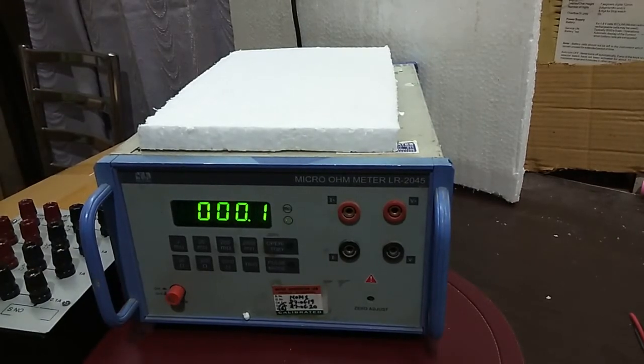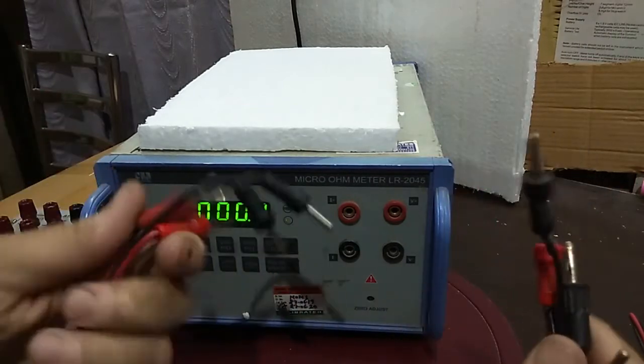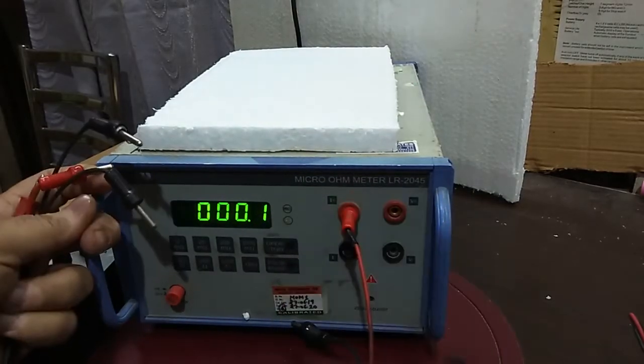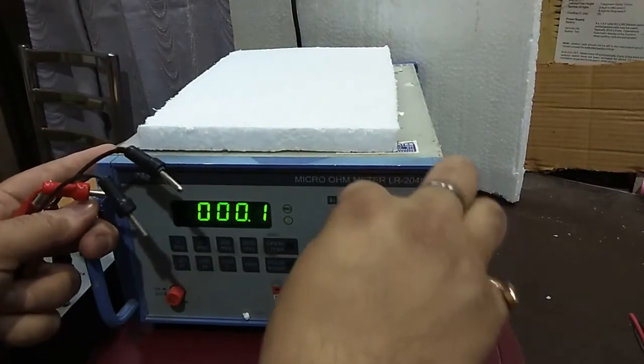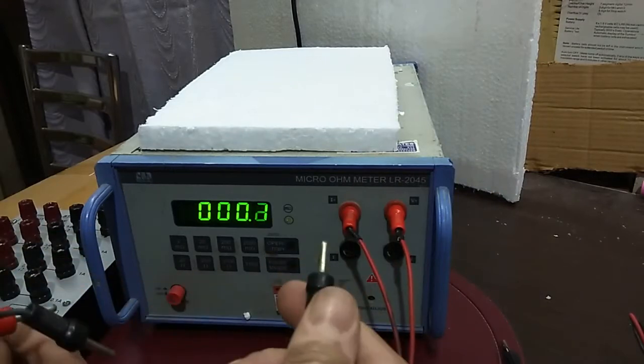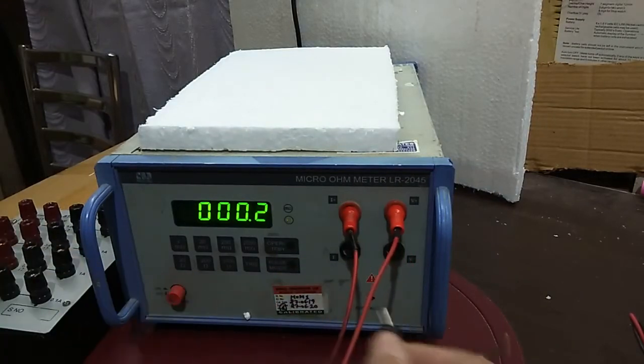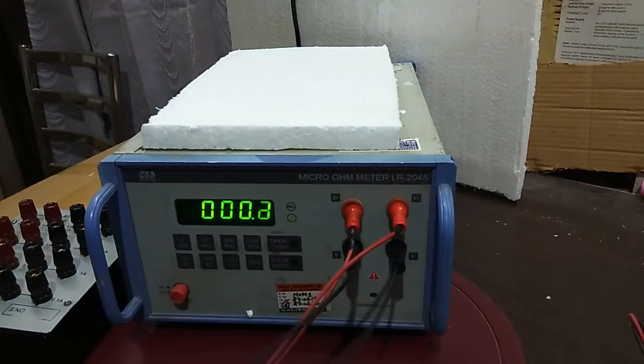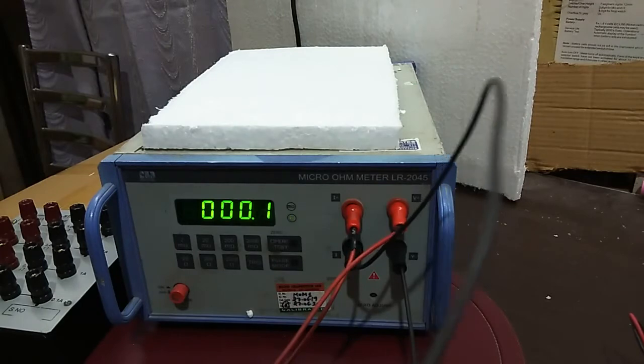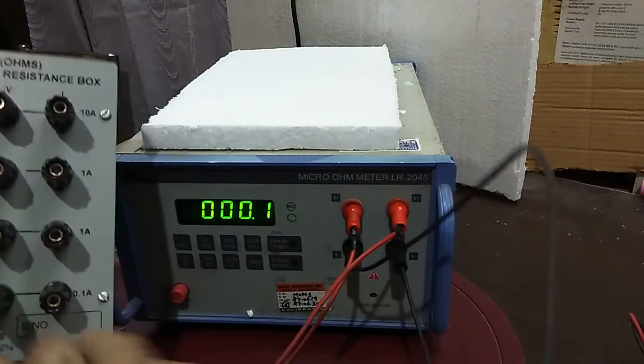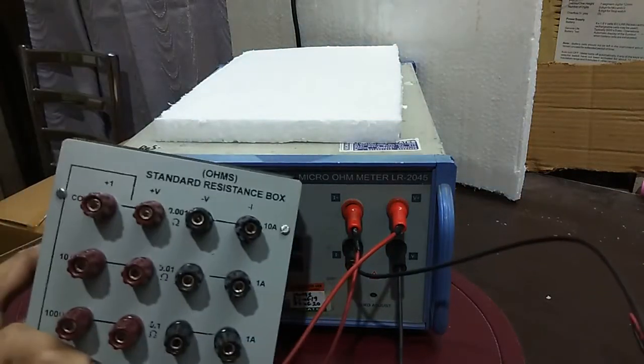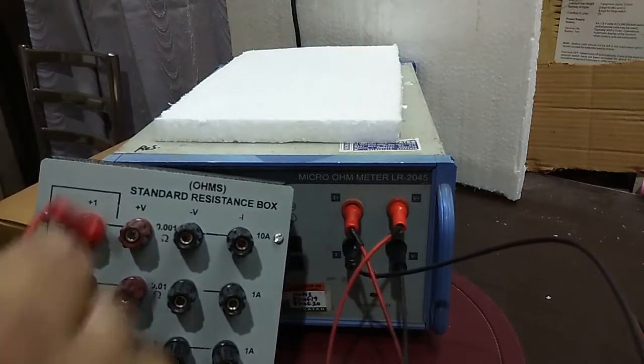These are the lead sets. I have made my own lead set, both ends will be the same. Let's start. That's plus I, this is minus I, and this is minus V. I'll be connecting it to the topmost range of this standard resistance box and this topmost range is one kilo ohm.